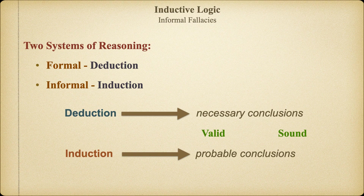So when we evaluate inductive arguments, we can't call them valid or sound. Instead, if we get sufficient evidence for a conclusion following the inductive method, we say the argument is strong. If we have a strong induction that also has true premises, we call it a cogent argument.